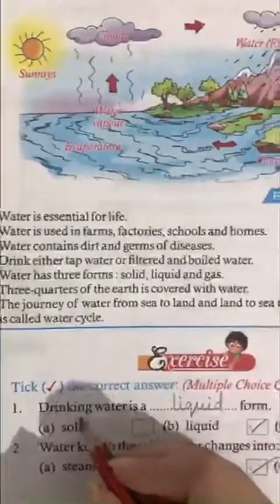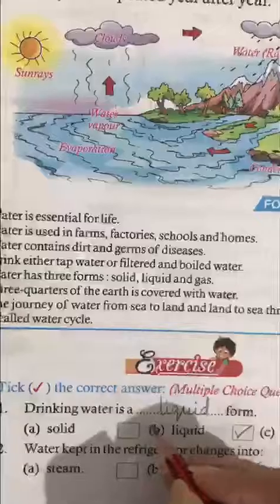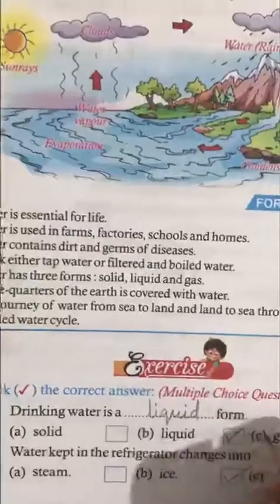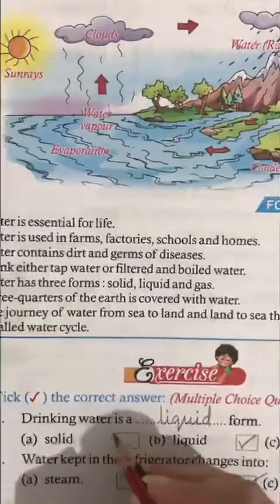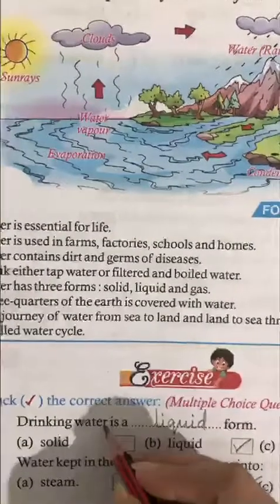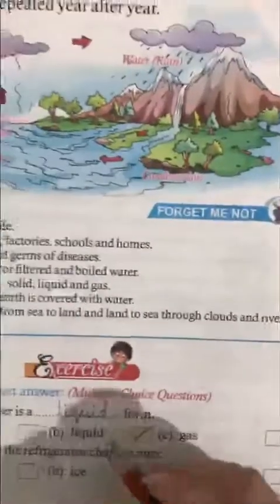Take the correct answer. Number 1: drinking water is a dash form. What is our water? Our water is solid, liquid, and gas.